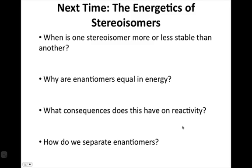Alright, so next time we're going to talk about the energetics of stereoisomers and the implications this has on reactivity and separation of enantiomers and diastereomers. So some questions to think about: When is one stereoisomer more or less stable than another? Why are enantiomers equal in energy? What consequences does this have on reactivity, and how do we separate enantiomers? So we're going to hit these questions next time, but thanks for joining us today, and I'll see you next time.